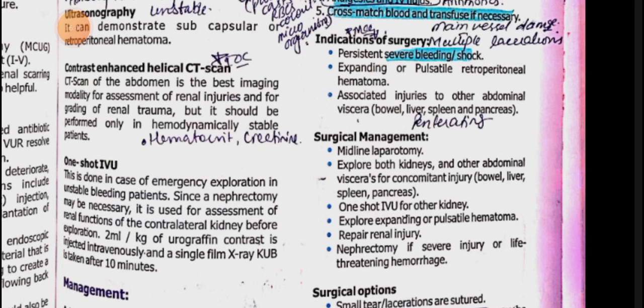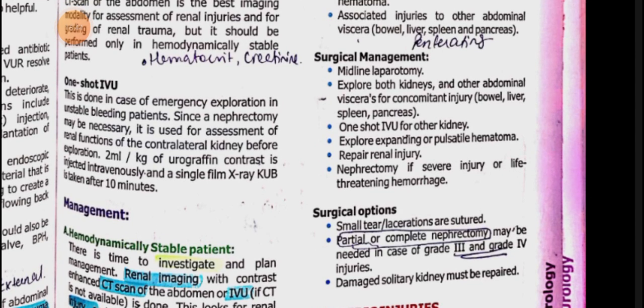For surgical management: perform midline laparotomy, inspect both kidneys and abdominal viscera for injury, check the other kidney, then explore the hematoma. If it is not expanding, repair the injury. If there is life-threatening hemorrhage and bleeding cannot be controlled, you perform nephrectomy — remove the kidney.